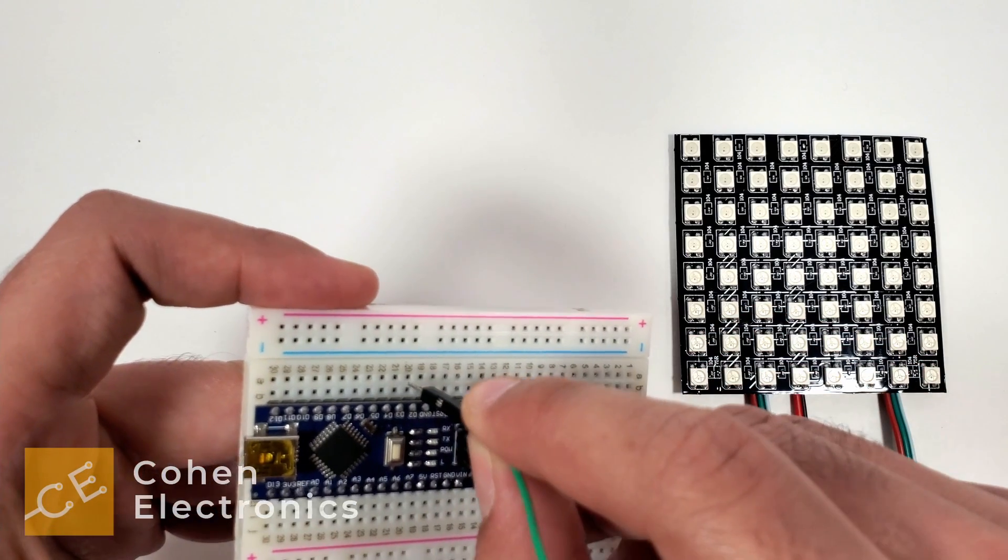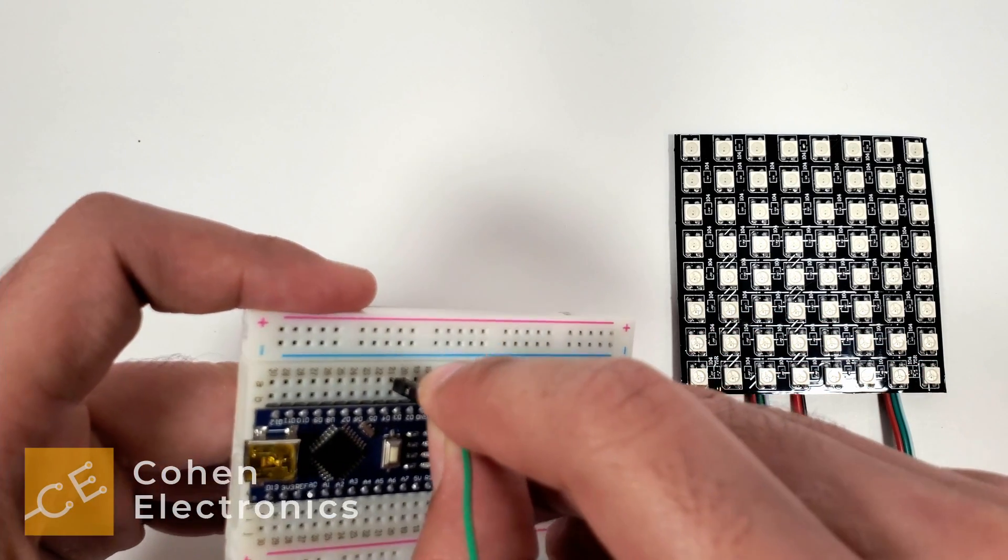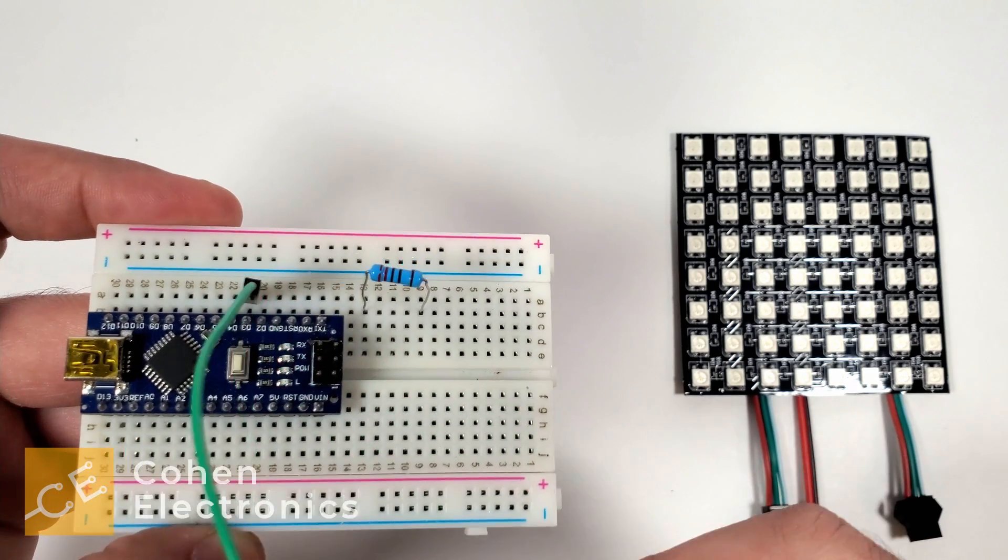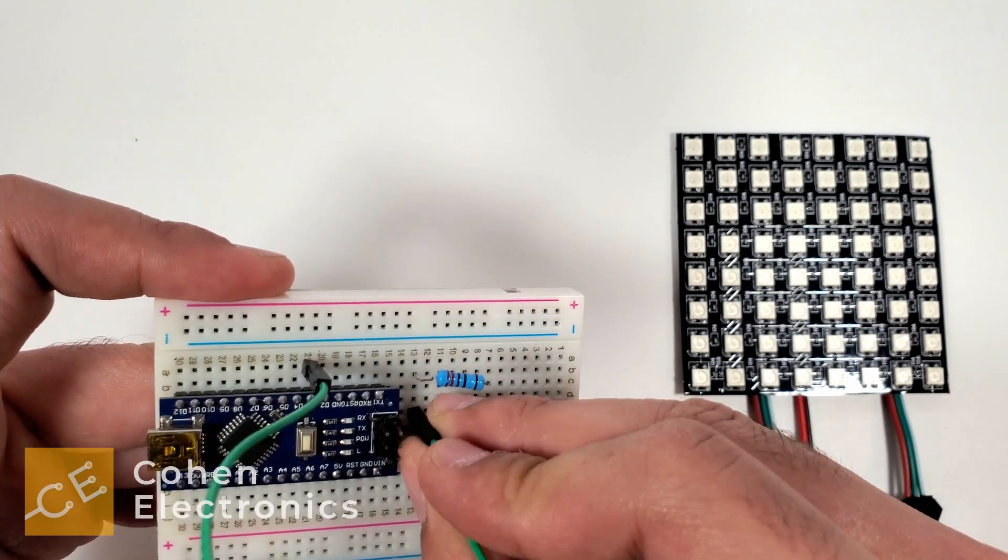Take a male to male wire and connect one end to pin 3 of the Arduino. Connect the other end of the wire to one end of the resistor.